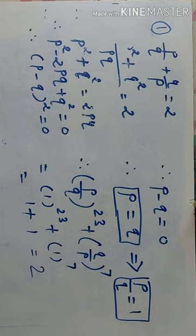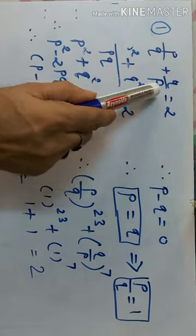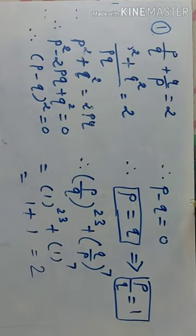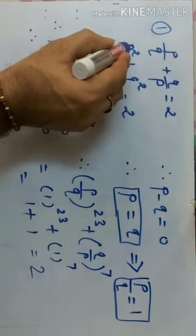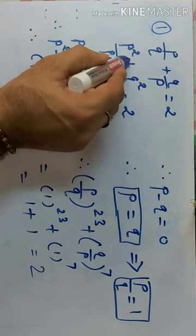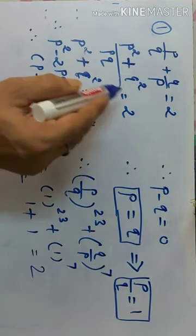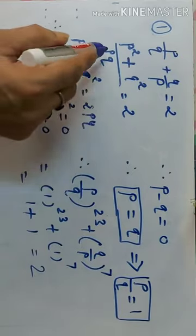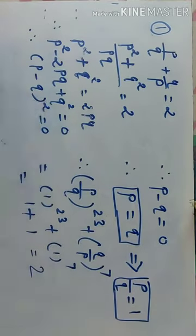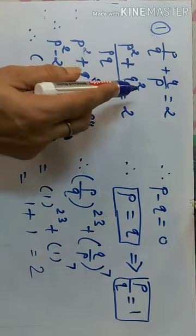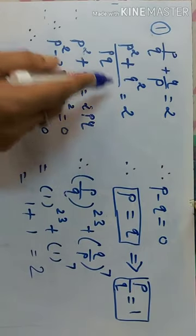पहले हमें P/Q की value निकालनी पड़ेगी। हमें दिया हुआ है P/Q + Q/P = 2। LCM लेते हैं तो P² + Q² upon P×Q = 2. Cross multiplication करते हैं, therefore P² + Q² = 2PQ.